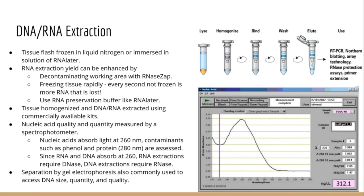The extraction of RNA in particular is sensitive to tissue processing procedures because RNA is inherently unstable due to its molecular structure. It is not only single stranded but it contains that additional oxygen group that, if deprotonated in high pH conditions, can attack its own phosphate backbone and auto-cleave itself.